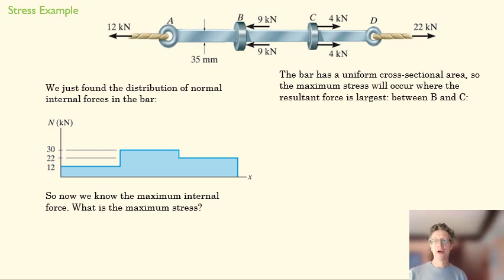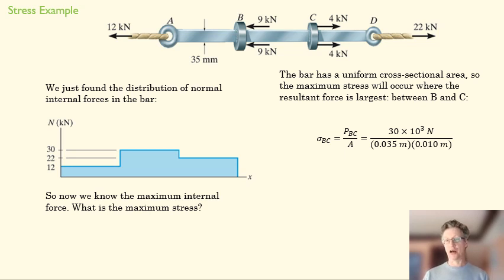And finding the stress is really fairly trivial in this case because we know we have a constant cross-section. So we'll use our stress equals force over A or over area. We'll take our 30 kilonewton stress that's in between B and C, or 30 kilonewton internal force rather, and divide that by the area. And those numbers, 35 millimeters and 10 millimeters, are given in the problem.